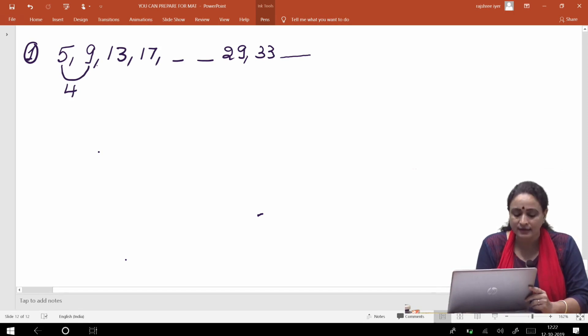Ye jo do numbers ke beech mein difference hai, 4. 5 plus 4 is 9. Then you have got this 9 plus 4 which is equal to again 13, 13 plus 4 is 17. So what should be the next number? I know it is 17 plus 4 which is equal to 21. Uske baad aur 4 jo denge, toh again 4 added to 21, so it becomes 25 and then again you have got add 4, you get 29, add 4 you get 33 and again add 4, you get 37.